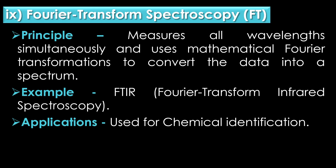The ninth type is Fourier transform spectroscopy. Fourier transform spectroscopy measures all wavelengths simultaneously and uses mathematical Fourier transformation to convert the data into a spectrum. An example is Fourier transform infrared spectroscopy or FTIR, which is widely used for chemical identification.